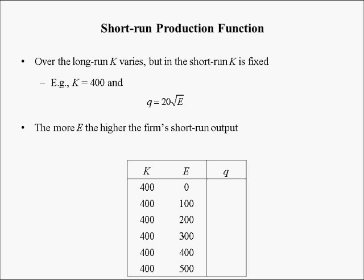Plugging E=0 gives output zero. E=100 gives √100 = 10, times 20 is 200. Plugging in 200 gives 283. Going from 0 to 100 employees, output increases by 200; from 100 to 200 employees, output only increases by 83. At E=300, output is 346 — an even smaller increase. At E=400, output is 400. At E=500, there's an even smaller increase for the same number of added employees.